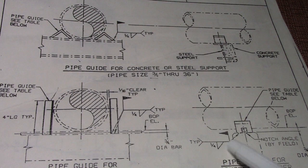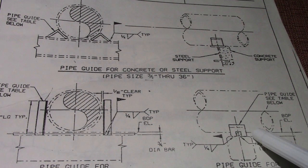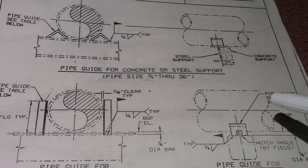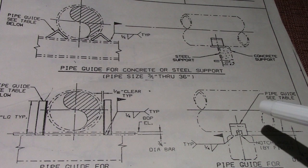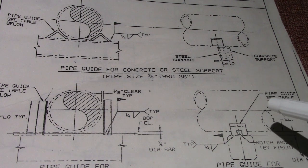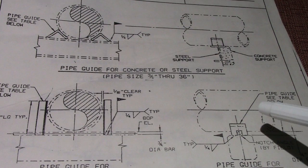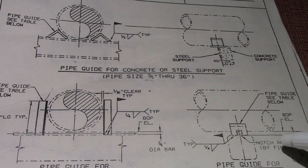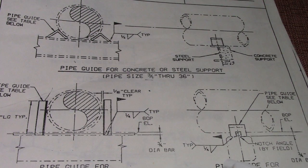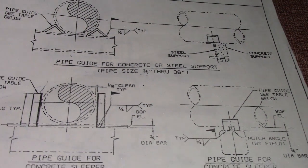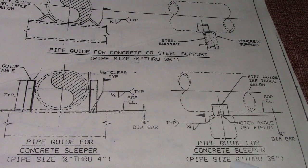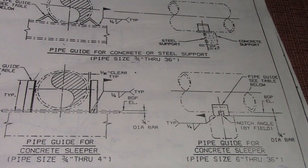This is a pipe guide, and this is also a pipe guide. All of this support details is only pipe guide — we don't have here a pipe shoe and anchor. All of this is pipe guide. Pipe guide for concrete slipper, pipe size 6 inches through 36 inches.